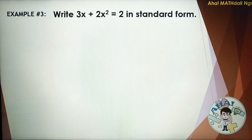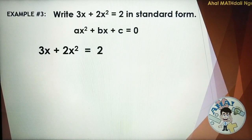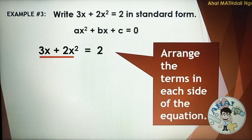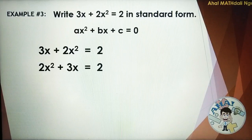Another example: Write 3X plus 2X squared is equal to 2 in standard form. The standard form is AX squared plus BX plus C is equal to 0. Observe that the terms on the left side of the equation are not yet arranged in order, so we need to arrange them. We have 2X squared plus 3X is equal to 2.